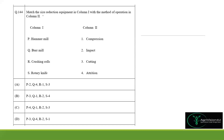Question 144 asks to match size reduction equipment with their method of operation. In a hammer mill, the food material is impacted by hammers, so the mode of operation is impact — P matches option 2. In a burr mill, food is ground between two revolving abrasive surfaces separated by a distance.